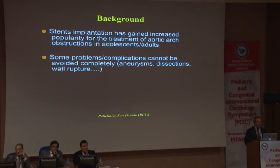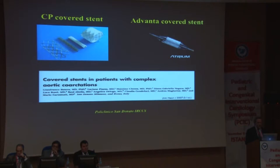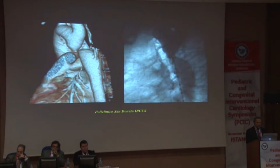Stent implantation has gained increased popularity for treatment of aortic obstruction, but some complications cannot be completely avoided, like aneurysm formation, dissection, or wall rupture. The question is whether cover stents can improve results and avoid complications. We have been using two types of cover stents. In most cases we use the CP cover stent, while the Advanta stent may have problems with recoil in some cases, ending up with nearly complete obstruction — so it is not our favorite cover stent.